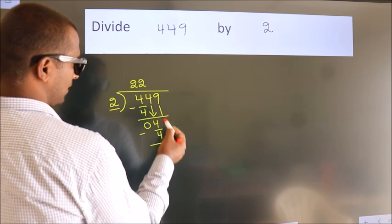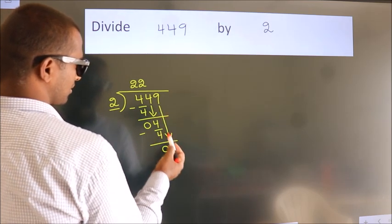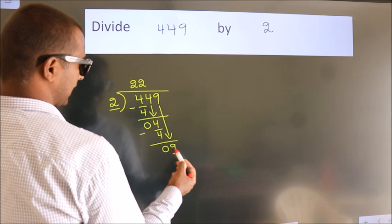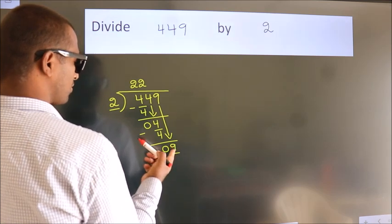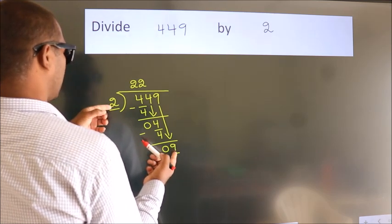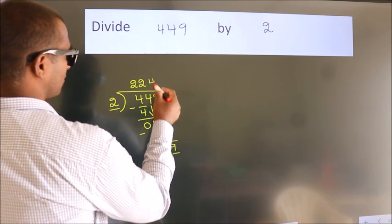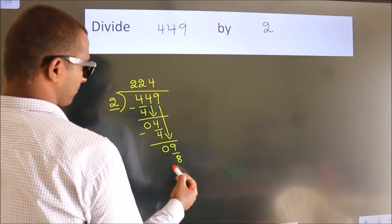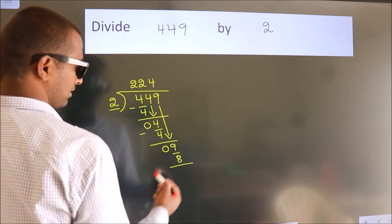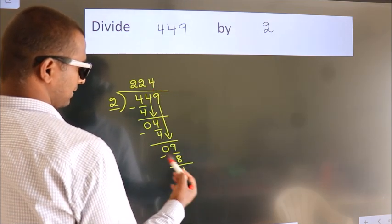After this, bring down the next number. So 9 down, so 9. A number close to 9 in the 2 table is 2 fours, which is 8. Now we subtract. We get 1.